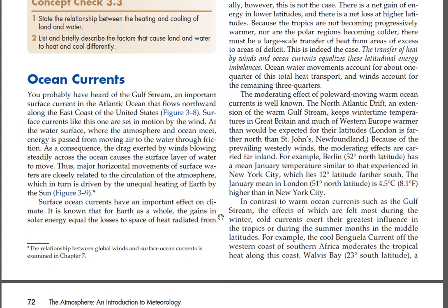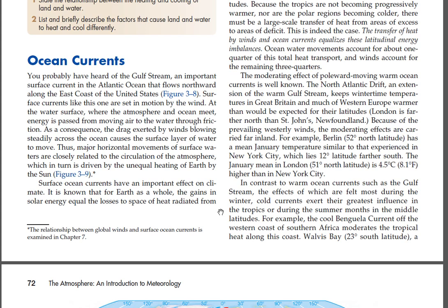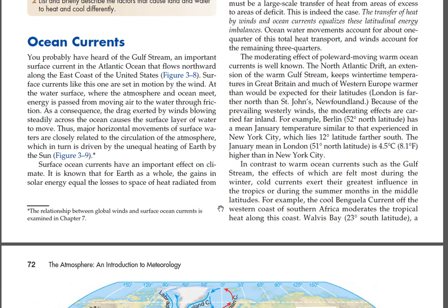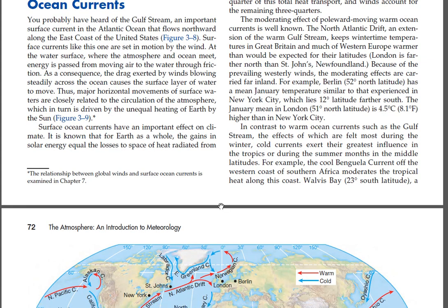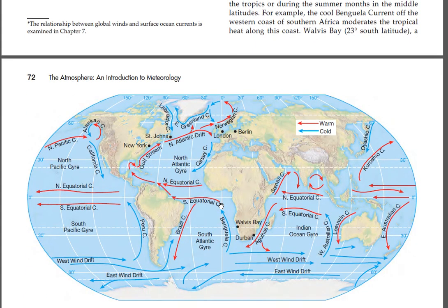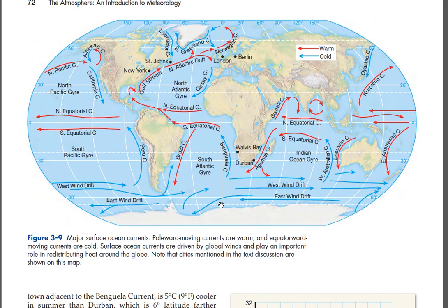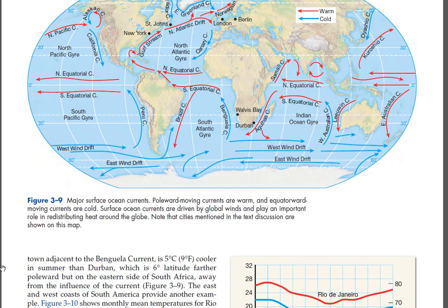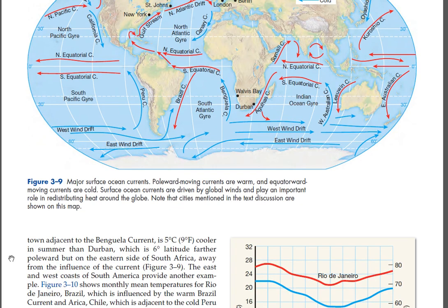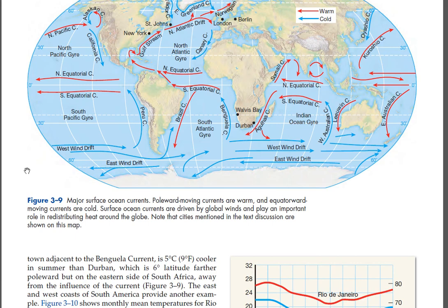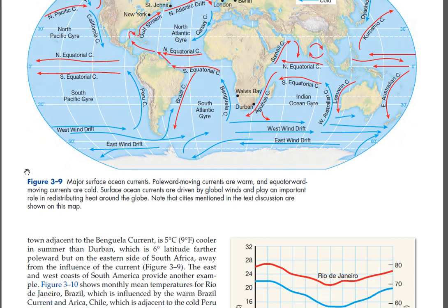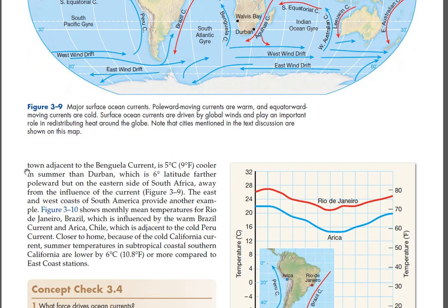In contrast to warm ocean currents such as the Gulf Stream — whose effects are felt most during the winter — cold currents exert their greatest influence in the tropics or during the summer months in the middle latitudes. For example, the cool Benguela current off the western coast of southern Africa moderates the tropical heat along this coast. Walvis Bay (23°S latitude), a town adjacent to the Benguela current, is 5°C (9°F) cooler in summer than Durban, which is 6 degrees of latitude farther poleward but on the eastern side of South Africa, away from the influence of the current. The east and west coasts of South America provide another example. Figure 3-10 shows monthly mean temperatures for Rio de Janeiro, Brazil — influenced by the warm Brazil current — and Arica, Chile — adjacent to the cold Peru current.